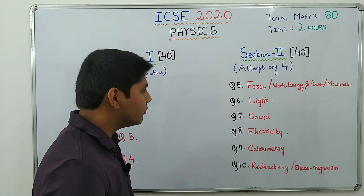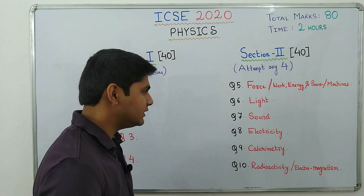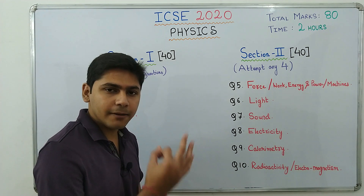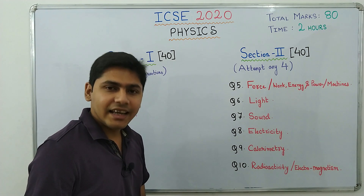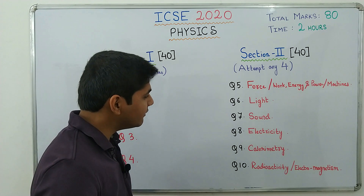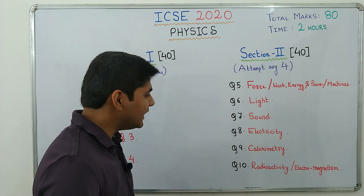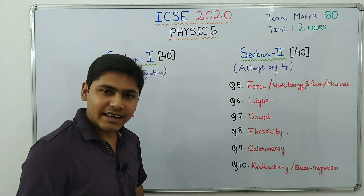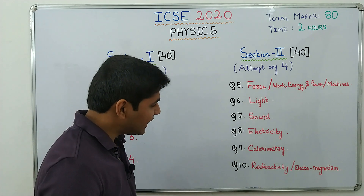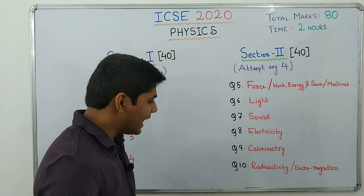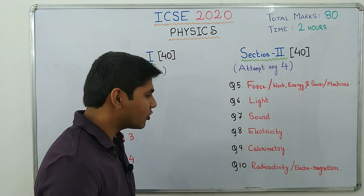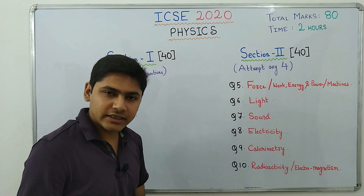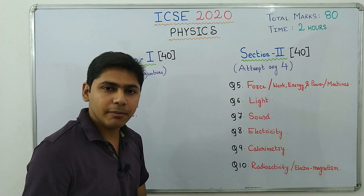The chapter combinations for Section 2 are as follows: Question 5 is from Force, Work Energy and Power, and Machines. Question 6 is from Light — all three chapters: Refraction of Light, Lens, and Spectrum. Question 7 is from Sound. Question 8 is from Electricity — both chapters: Current Electricity and Household Circuits. Question 9 is from Calorimetry, and Question 10 is from Radioactivity and Electromagnetism. You get six questions and must attempt any four.